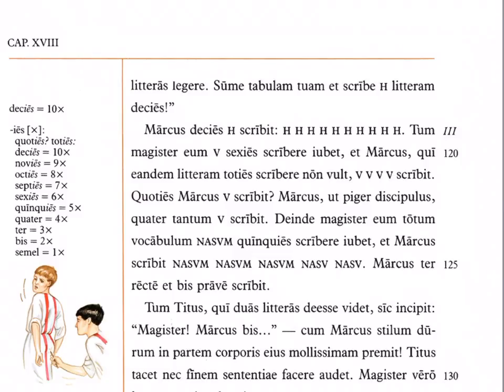In the margin we see multiplicative adverbs using the '-ies' or '-iens' ending. 'Quotiens' means how many times, 'totiens' means so many times. The first ones are irregular: 'semel' — once, 'bis' — twice, 'ter' — three times, 'quater' — four times. From five onward you use the '-ies' ending: 'quinquies,' 'sexies,' 'septies,' and so on, even up to very high numbers like 'quinquies centum' — five hundred times.